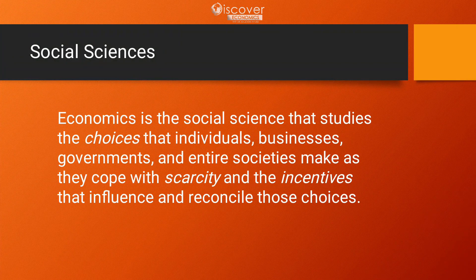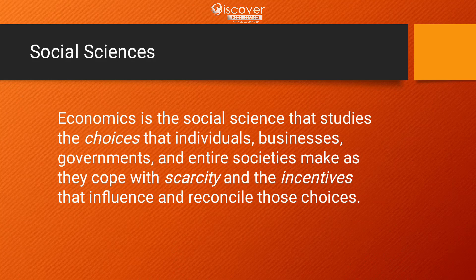Contrary to natural science, which is a branch of science that deals with the physical world, social science deals with human behavior. For example, there are other types such as psychology, sociology and political science. Economics is also part of social science.